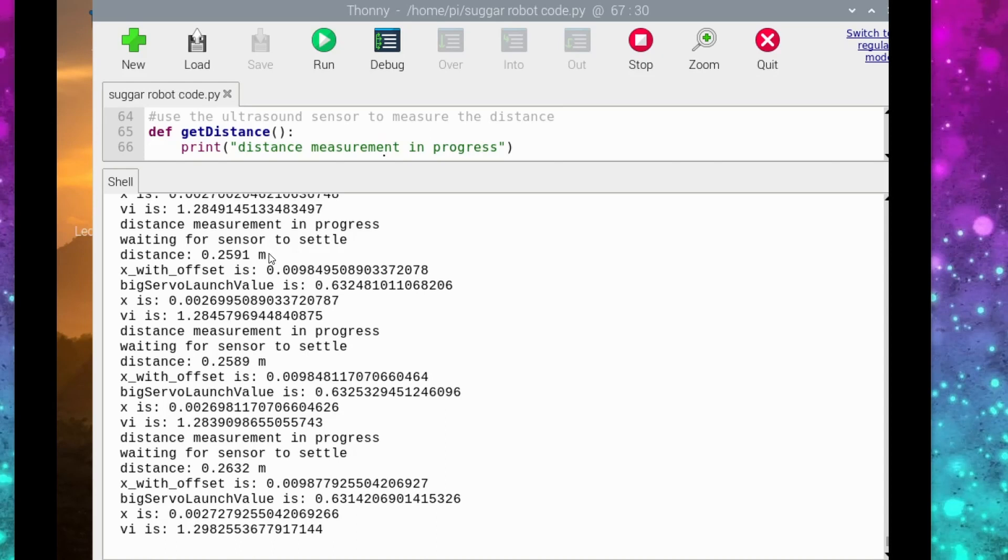The ultrasound sensor is a bit noisy and can give wrong readings but it is less noisy if you let it settle and take a couple of readings in a row and then extract the measured distance.